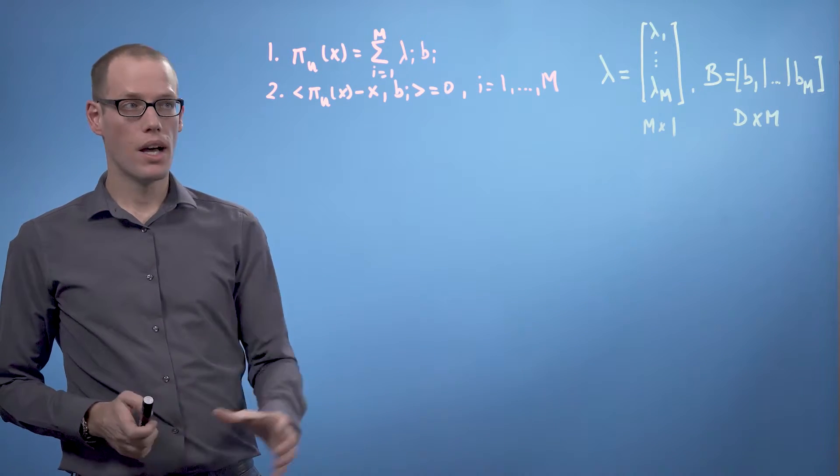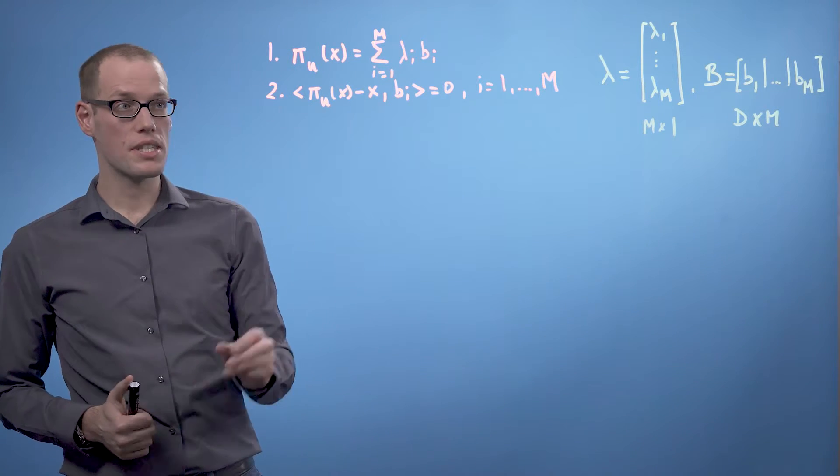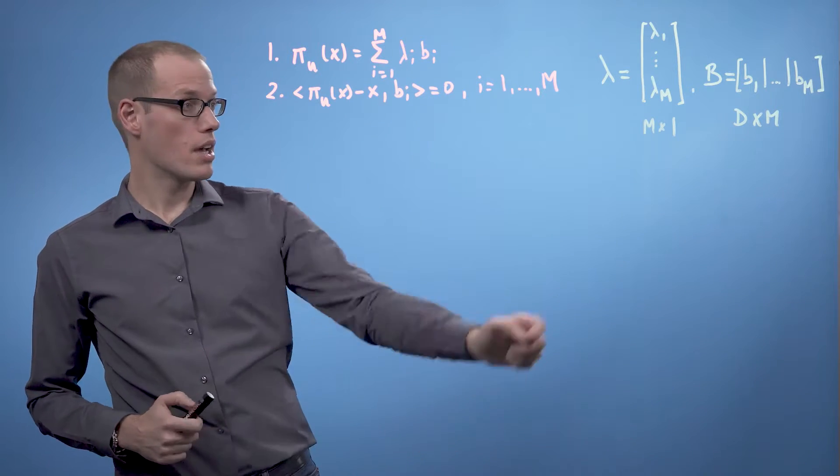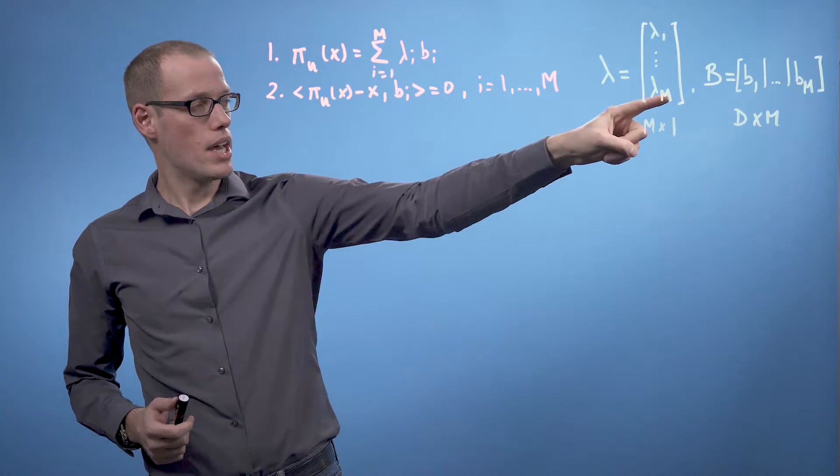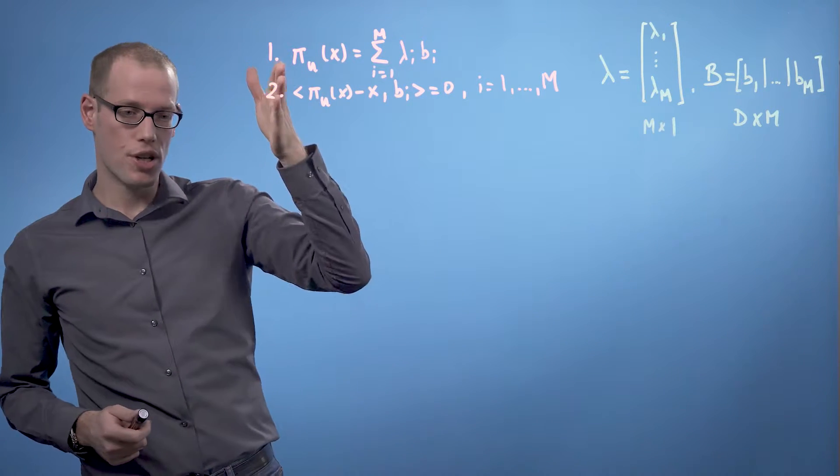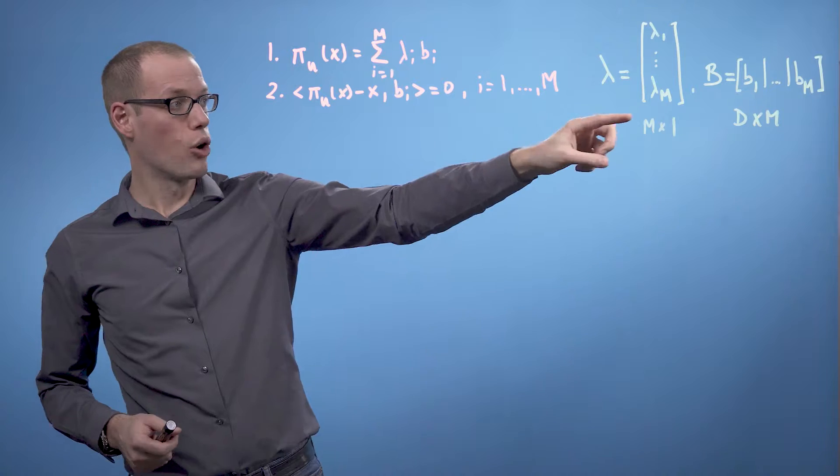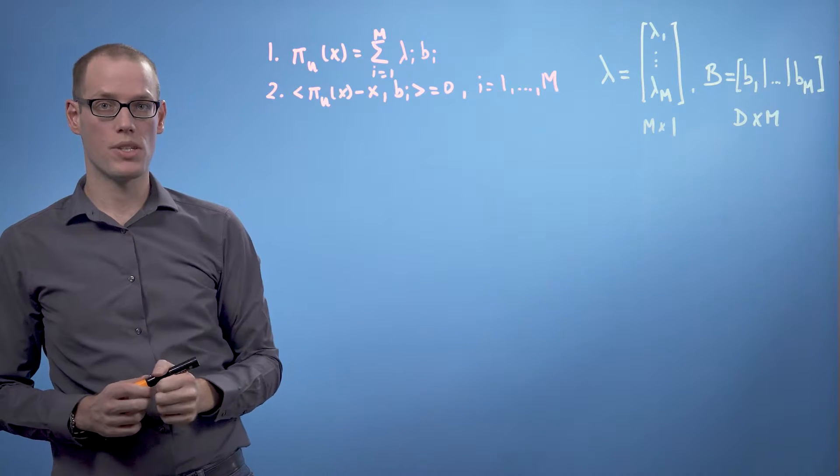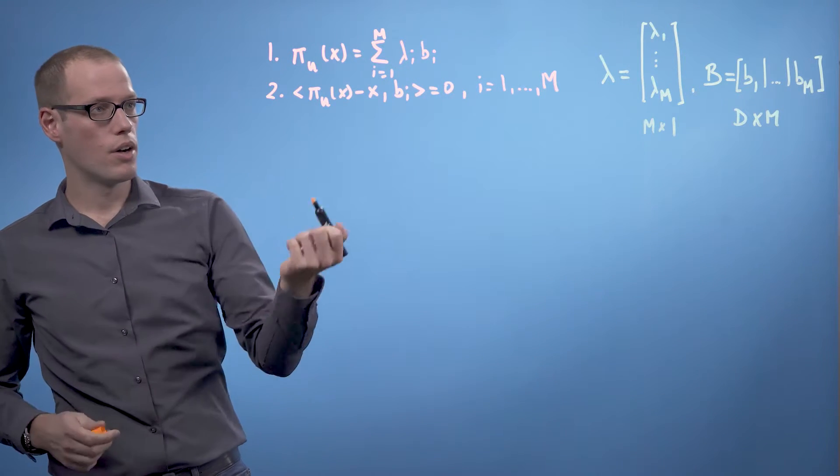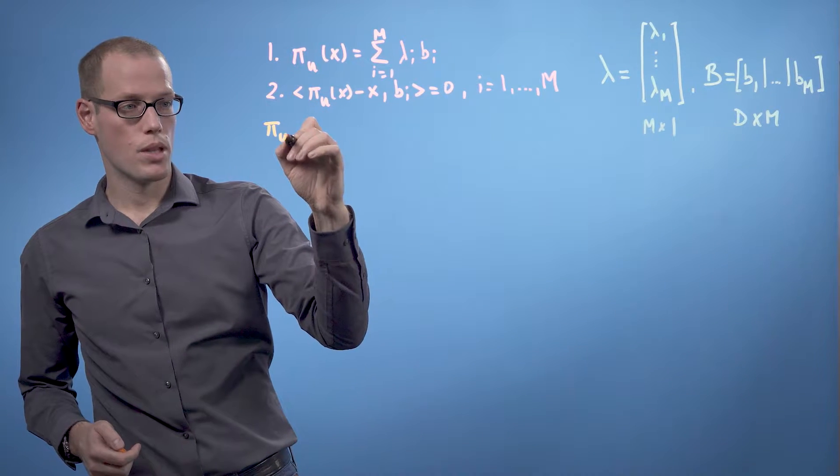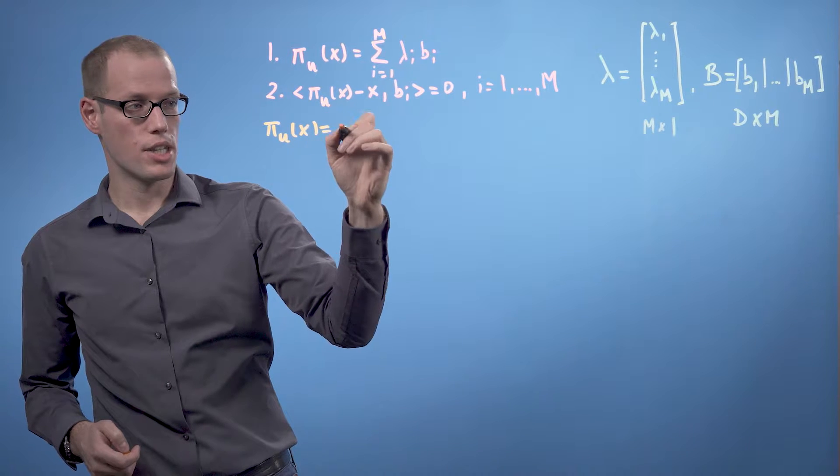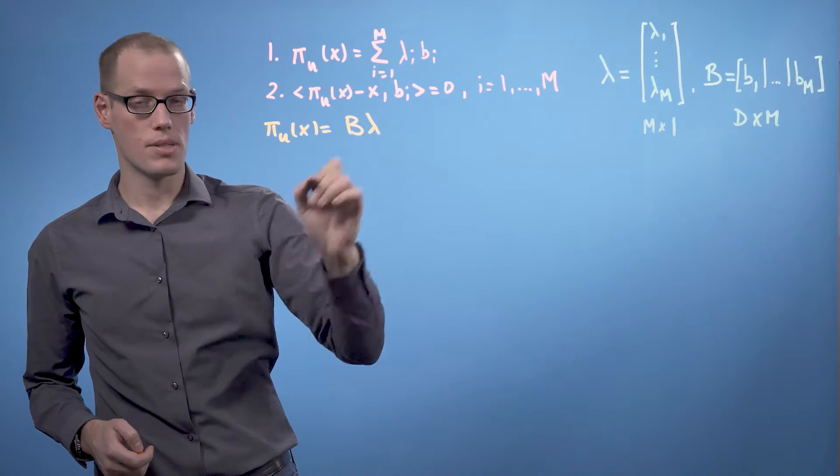Let's derive this result. I copied our two insights up here, and I have defined two quantities: a lambda vector which consists of all these λ_i here, and a B-matrix where we just concatenate all basis vectors of our subspace u. Now, with this definition, we can also write π_u(x) equals B times λ.